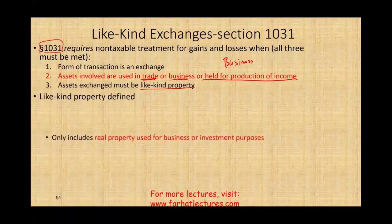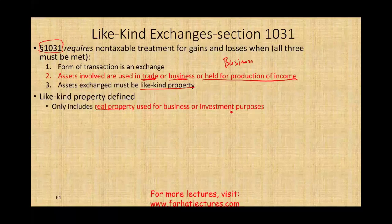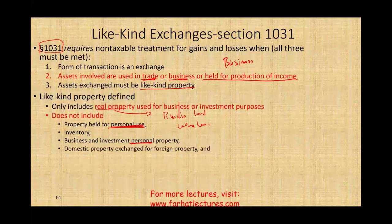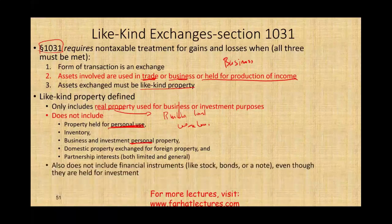Like-kind property is defined to include only real property used for business or investment purposes. It does not include: property held for personal use, inventory, business and investment personal property, domestic property exchanged for foreign property, partnership interests, or financial instruments like stocks, bonds, or notes — even if held for investment. You need to know what is included and what is not, because the CPA exam may test you on this.